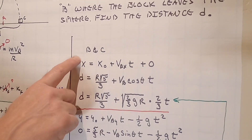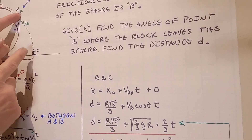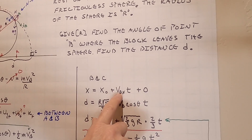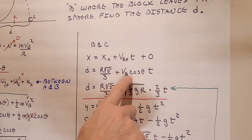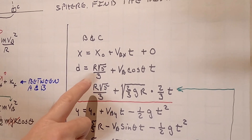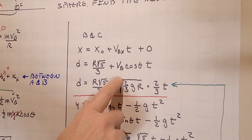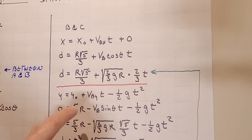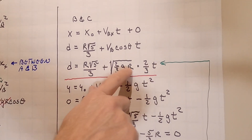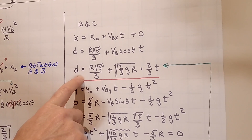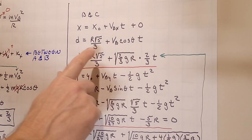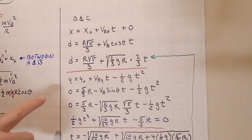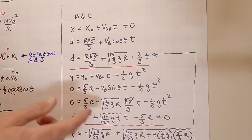Plugging into the constant-acceleration equations: x = x₀ + v_Bx · t, where x₀ = r√5/3 and v_Bx = v_B·cosθ = √(2gR/3) · (2/3) · t. That gives the x equation. For D, I have two unknowns — D and t — so I'll use the y equation to solve for t first, then substitute back.